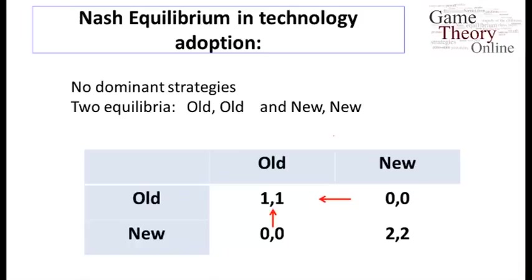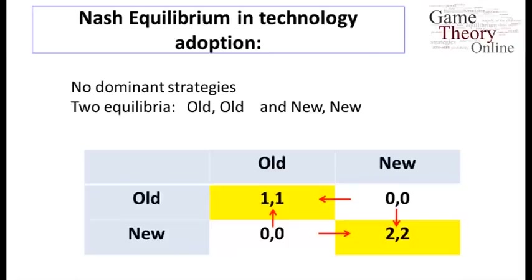If the other person's using old, then I get a payoff of one from using old and zero from using new. If the other person's using the new technology, I get a payoff of two from using new and zero from choosing old. My best response depends on the other player: if the other player's choosing old, my best response is old; if the other player's choosing new, my best response is new. We end up again with two different equilibria — old-old and new-new. So here's a situation where we could get stuck at the old technology. If we're both using old, nobody wants to move away from it without the other player also moving. And if we're both using new, that's stable as well. So there are two stable equilibrium points to this game.